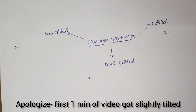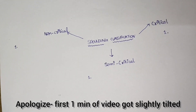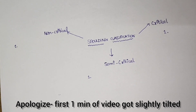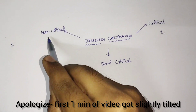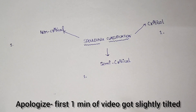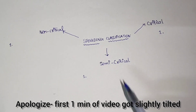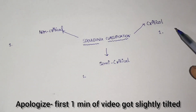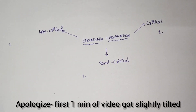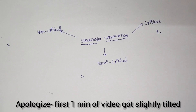The Spaulding classification determines contamination risk based on how medical devices contact different areas of our body. Medical devices that come in contact with intact skin fall under non-critical. Devices that contact mucous membrane, non-intact skin, or burn surfaces fall under semi-critical. Devices that contact a break in skin or mucous membrane, or enter a sterile body cavity or the vascular system, fall under critical.